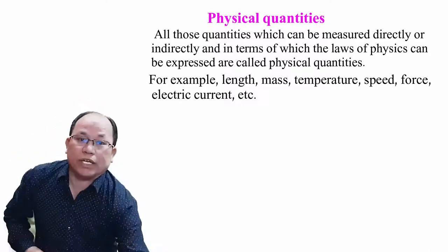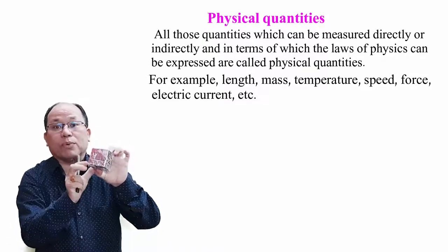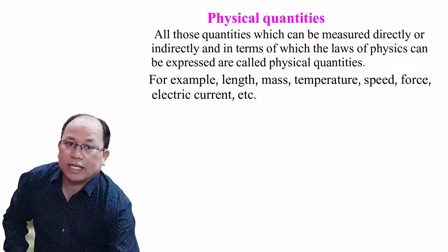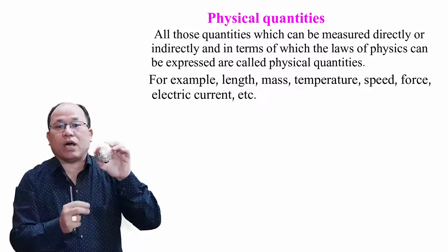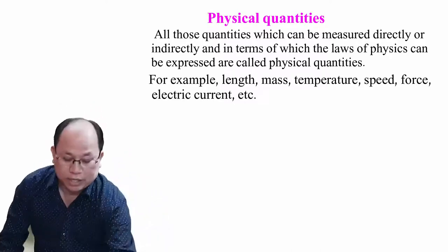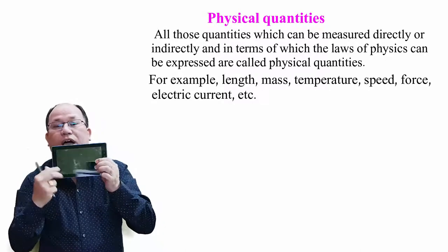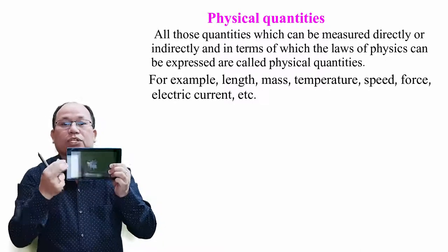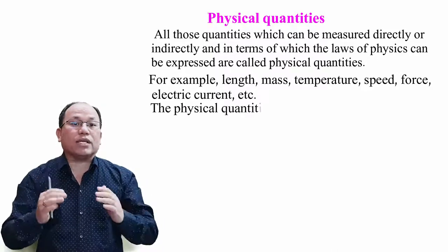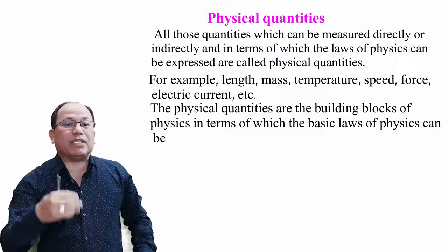Take the example of a cuboid — we can find out its volume, and volume is a physical quantity. Similarly, speed is a physical quantity. We can also find out the area of a tablet, and that area is a physical quantity. Physical quantities are the building blocks of physics, in terms of which the laws of physics can be expressed in mathematical form.